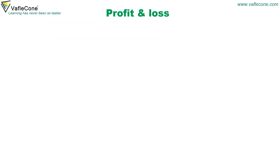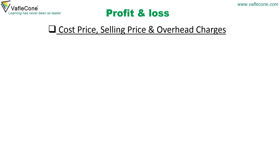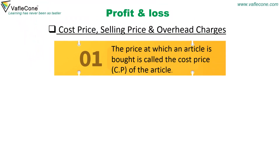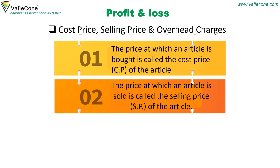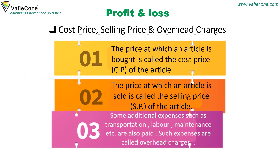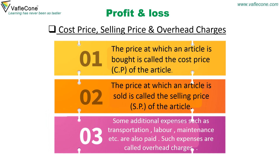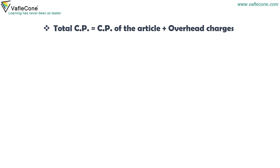Profit and loss: cost price, selling price, and overhead charges. First, the price at which an article is bought is called the cost price. Second, the price at which an article is sold is called the selling price. Third, some additional expenses such as transportation, labor, and maintenance are called overhead charges. Total cost price equals cost price of the article plus overhead charges.